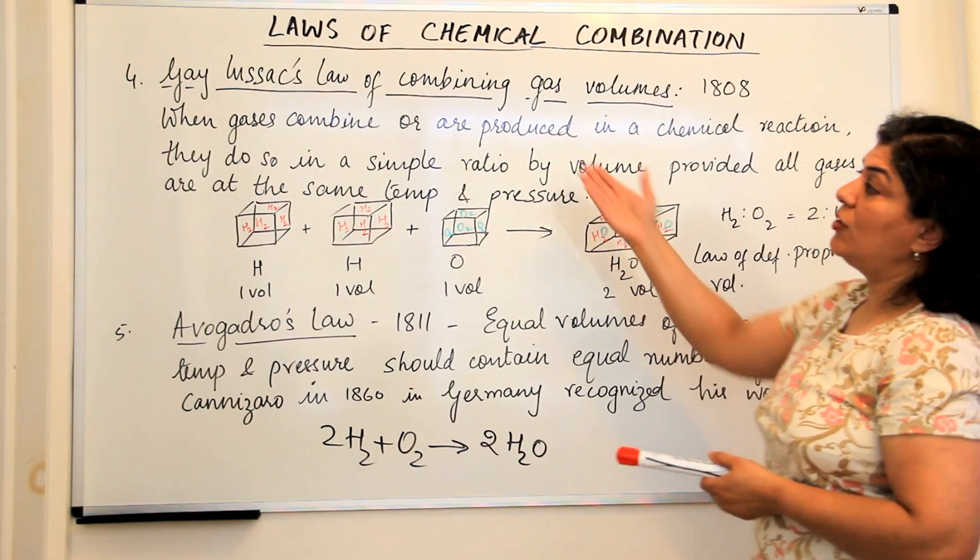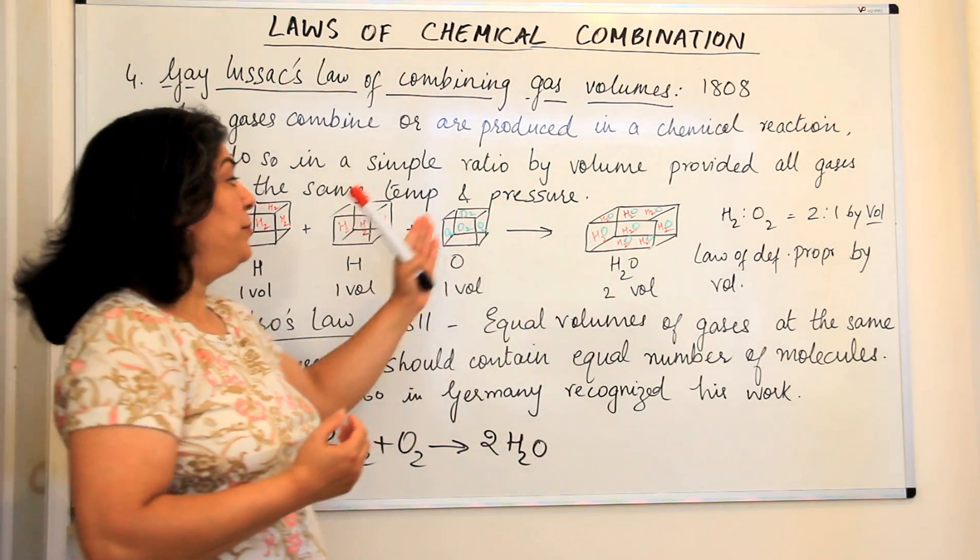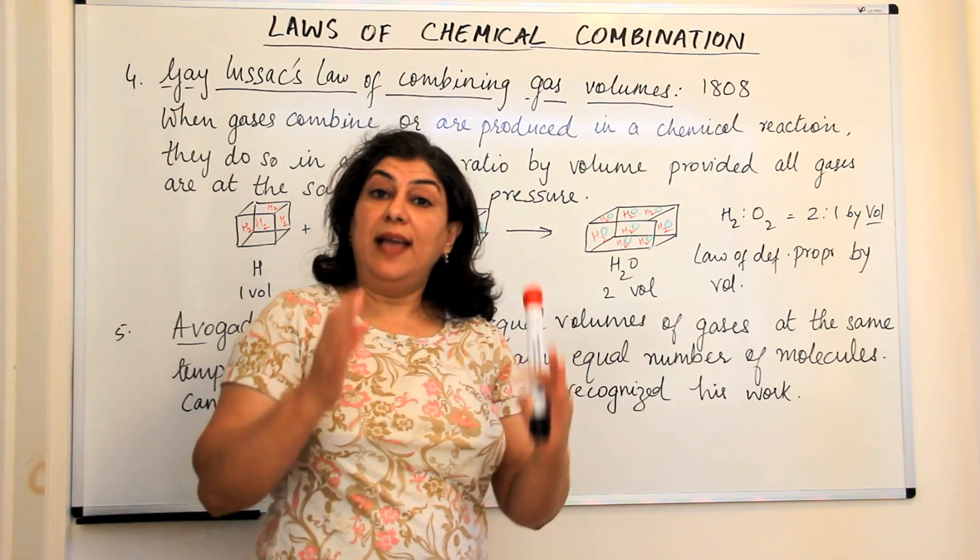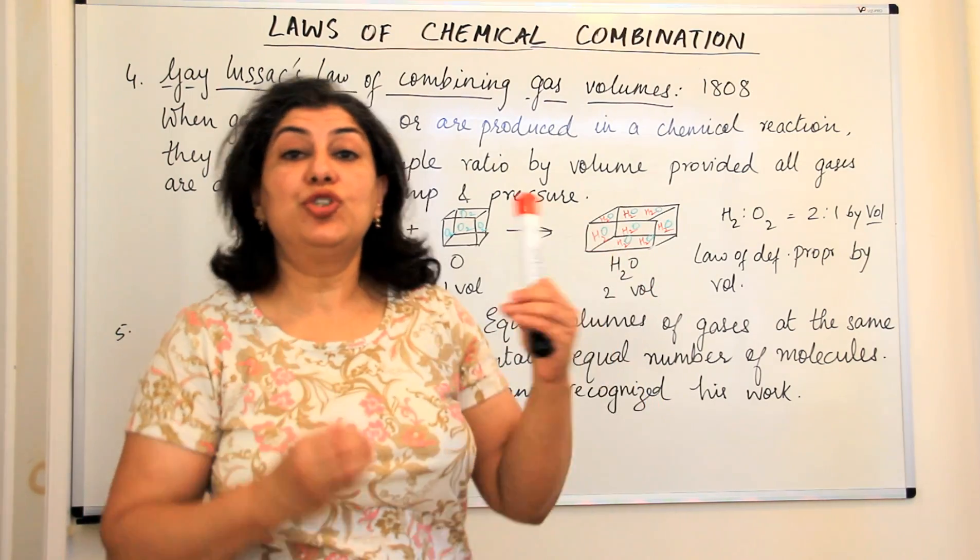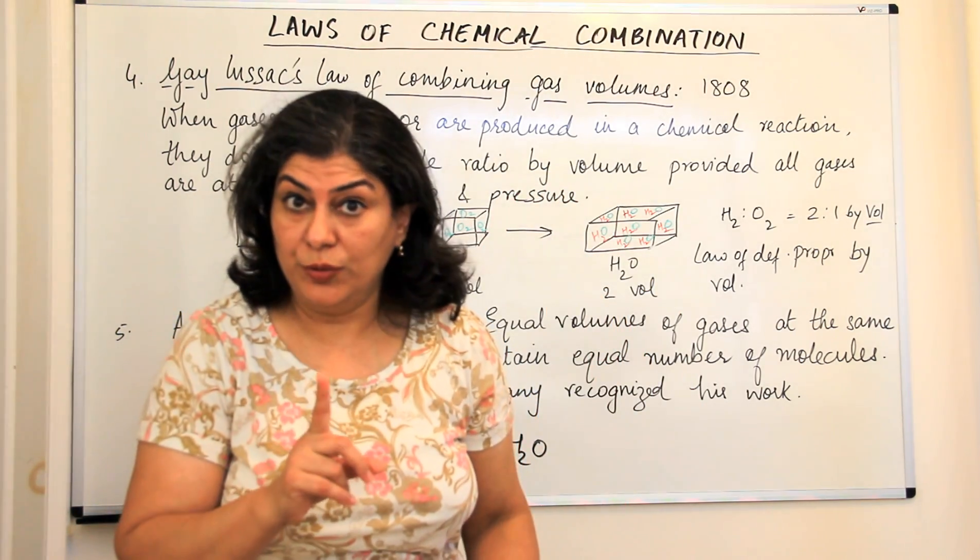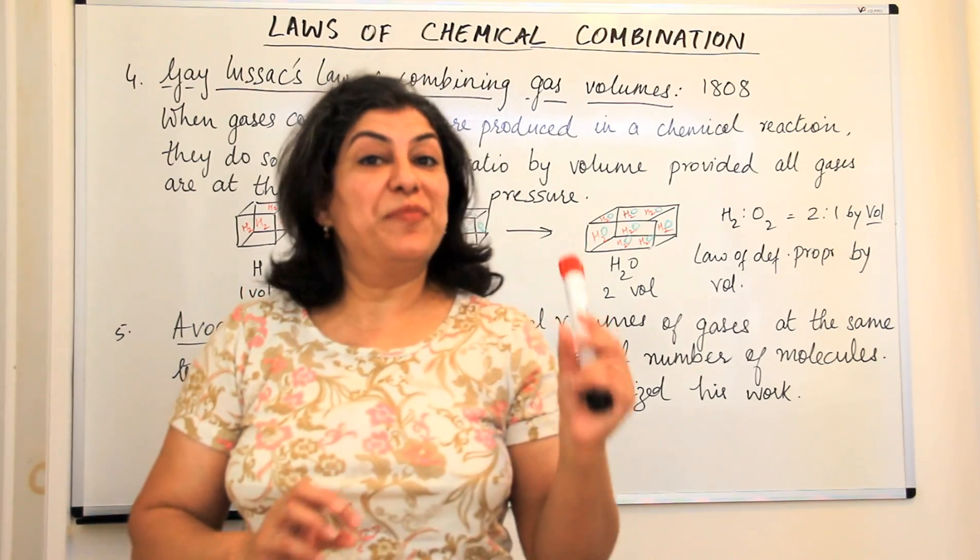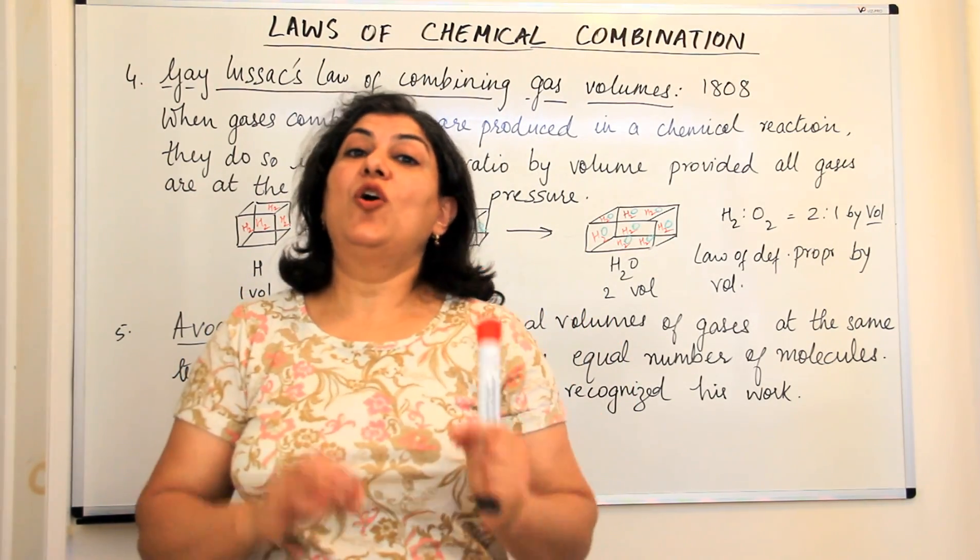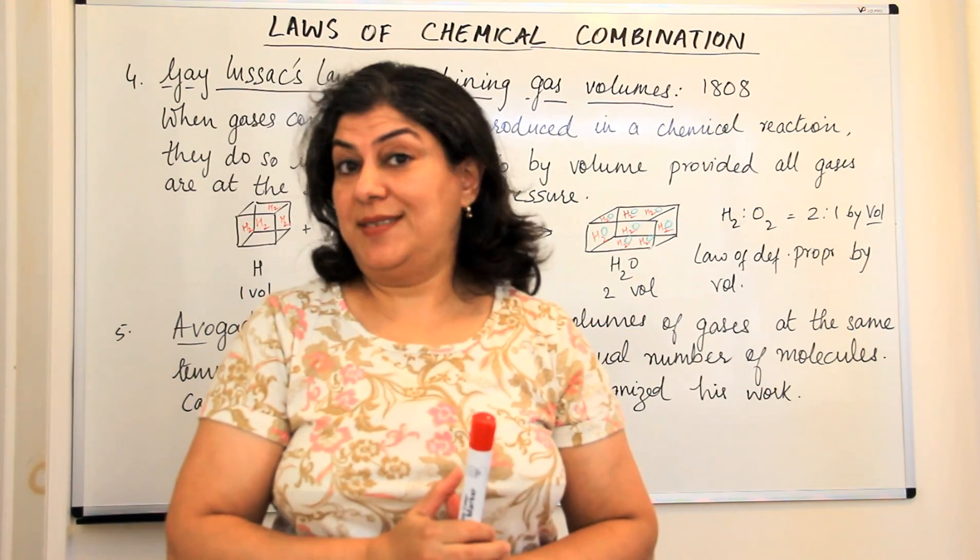This is what the law states: that when you have reactants which are gases and products which are gases, then they will have a simple whole number ratio to each other by volume. But what's the condition? The condition is that the temperature and pressure of all the reactants and the products should be the same.